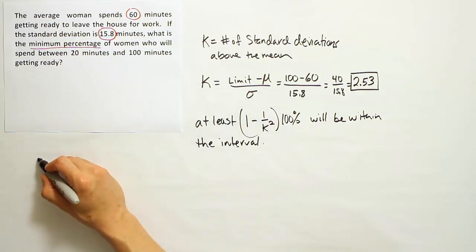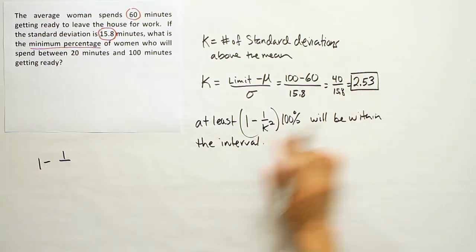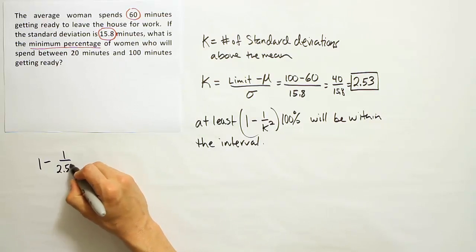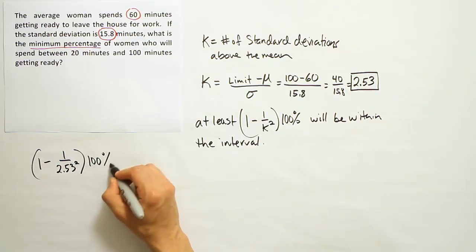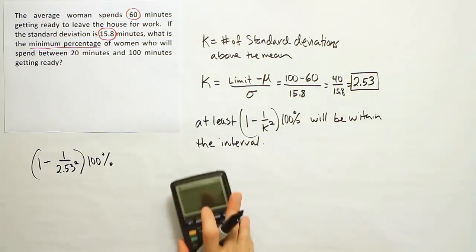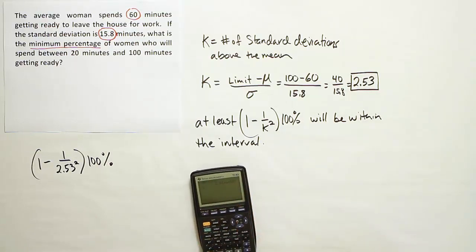1 minus 1 over 2.53 squared, then multiply the answer by 100%. That arithmetic will give me the percent that I need.